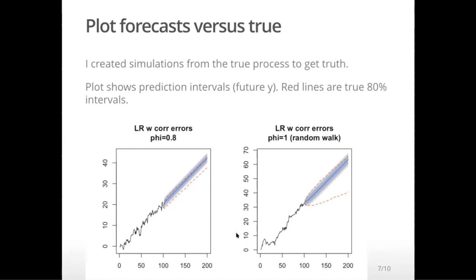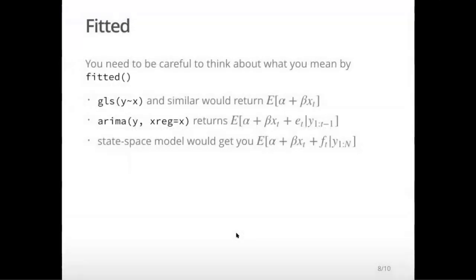If you think there's a random walk in your data or you're trying to model random walks, then you use a state-space model where you can incorporate that into your model. The second thing that you need to be careful about whenever you're doing regression with correlated errors is that whatever function you're using, what it considers fitted, the model fit can be really different. This is just a word of warning just to make sure that you understand what the function will output as the model fit.